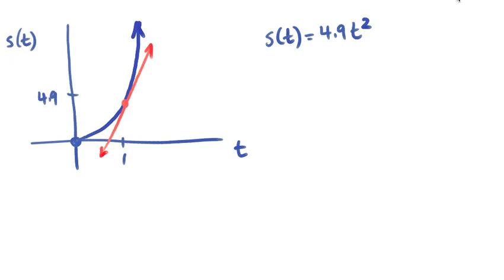so from say 1 to 1.1 seconds, is I'm actually creating secant lines. So I'm creating a line that is going from 1 to 1.1 and finding the slope of that line.